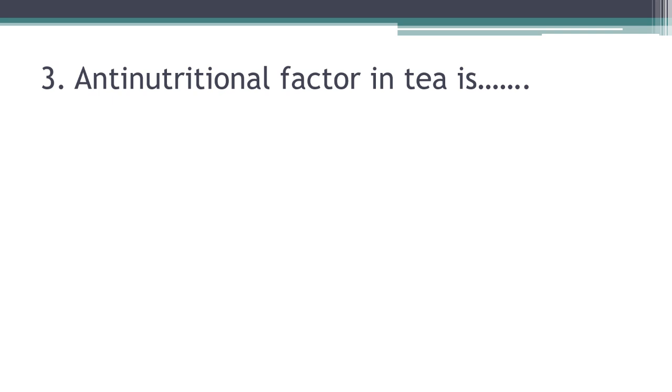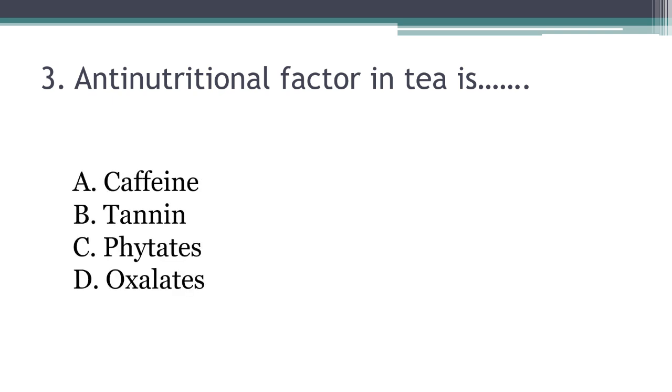Third question: Antinutritional factor in tea is? Tea contains an antinutritional factor. Options are caffeine, tannin, phytates, or oxalates. The answer is B - tannin is the antinutritional factor in tea.